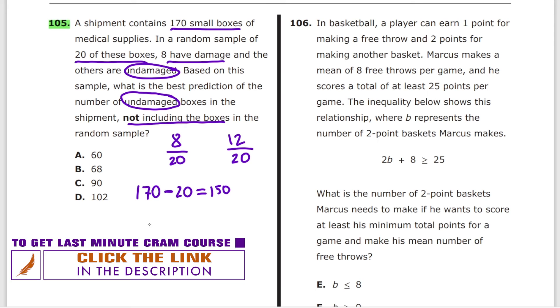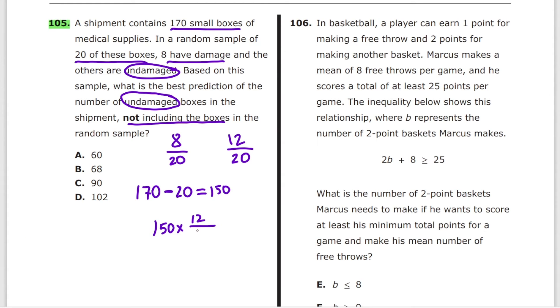From here on, it's super easy. 150 multiplied by 12 over 20. That's over 1. Cancel this, cancel this. This divided by 2 is 6, this divided by 2 is 1. So just 15 over 1 times 6 over 1, which is 90. And the answer is C.